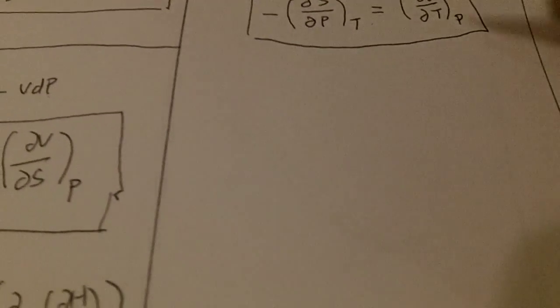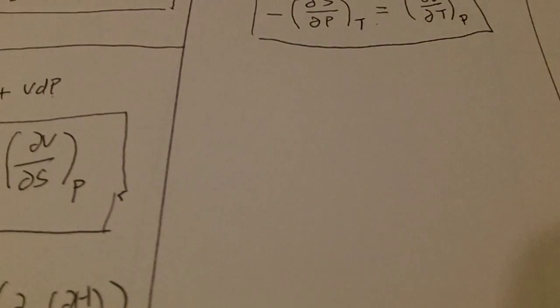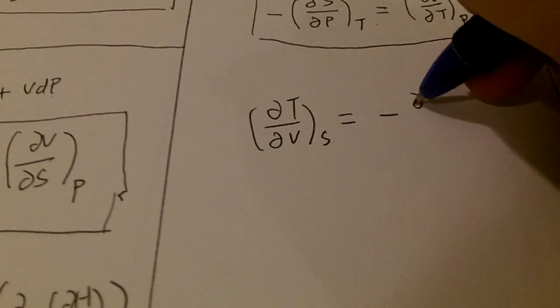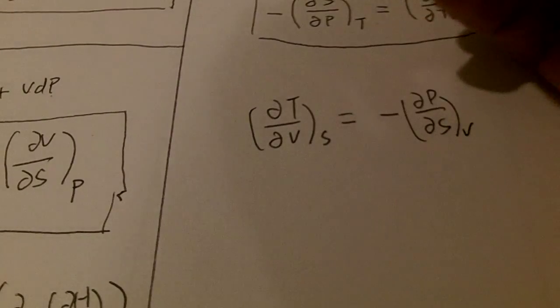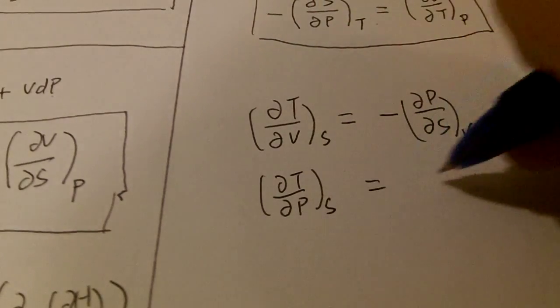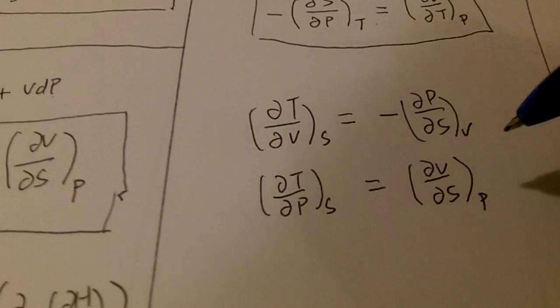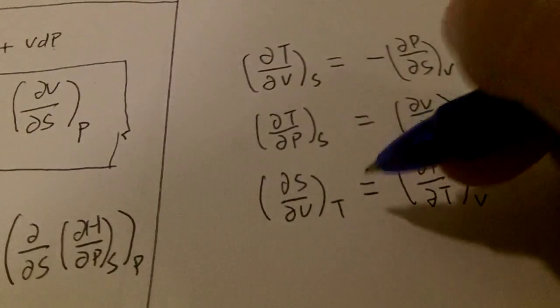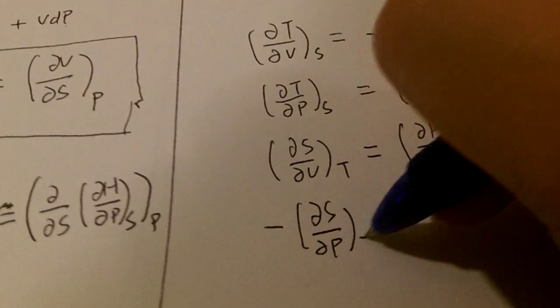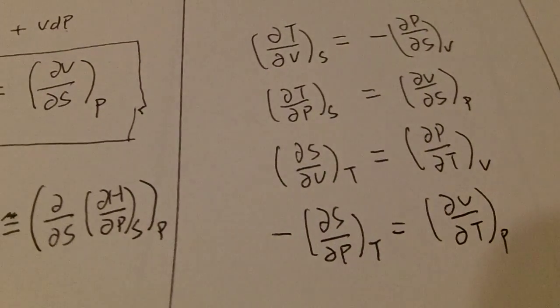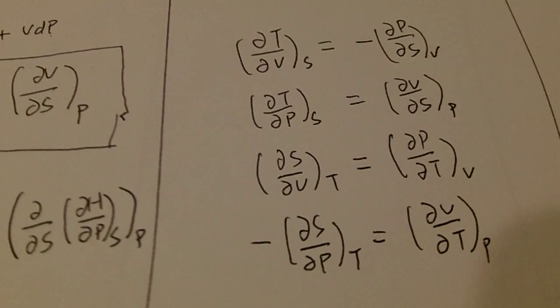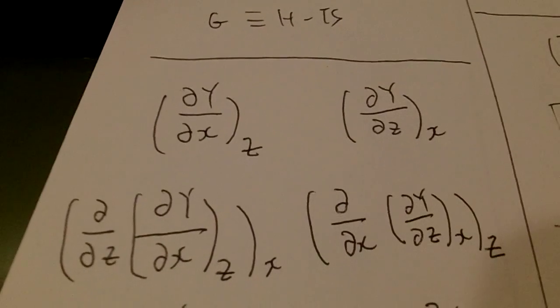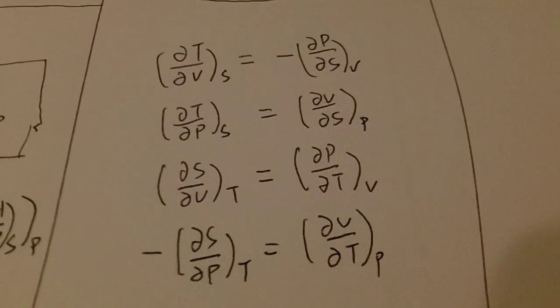Now at the end of the day, you will have four relations. Del T del V S, equals to negative del P del S V. Del T del P S equals to del V del S P. Del S del V T equals to del P del T V. And lastly we have negative del S del P T, equals to del V del T P. These are our Maxwell relations that we just derived. We don't have to memorize them. As long as we know these four relations, and all these processes, the partial differential rules, we can actually just derive these four Maxwell relations.